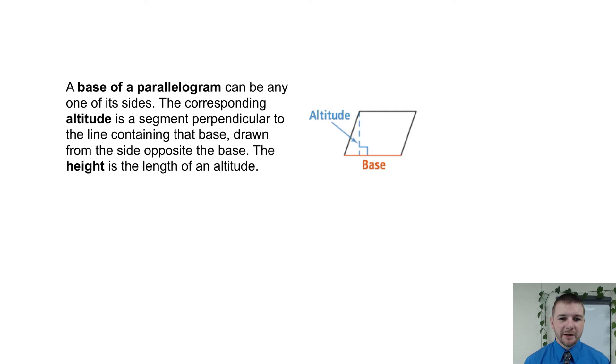A base of a parallelogram can be any one of its sides. The corresponding altitude is a segment perpendicular to the line containing that base, drawn from the side opposite the base. The height is the length of the altitude.